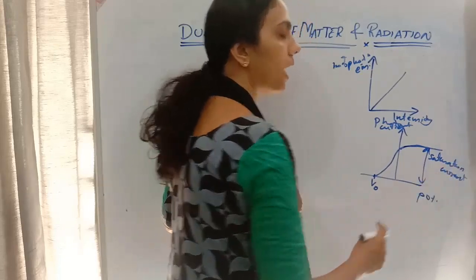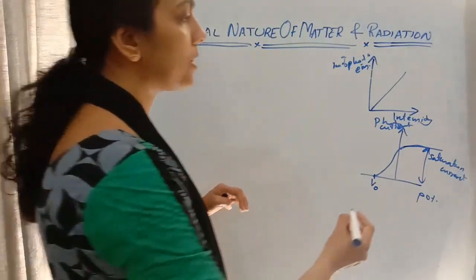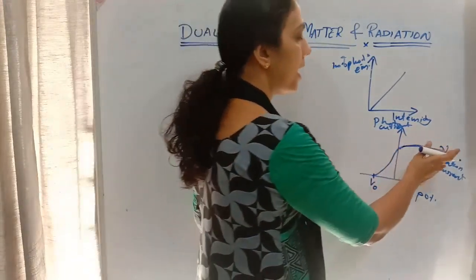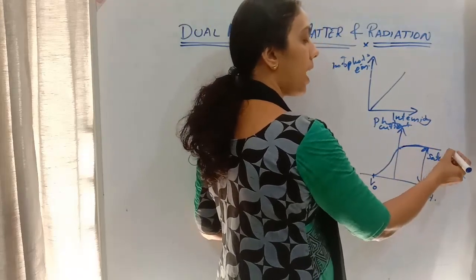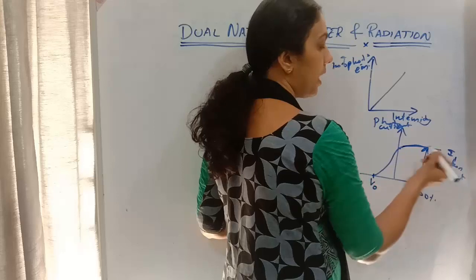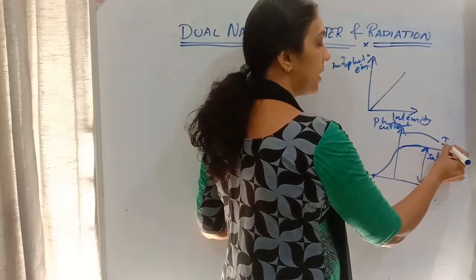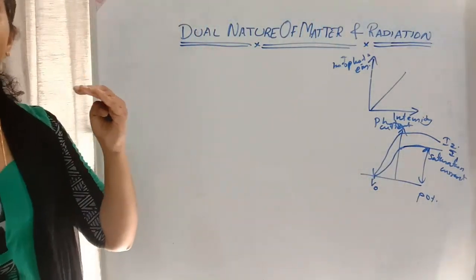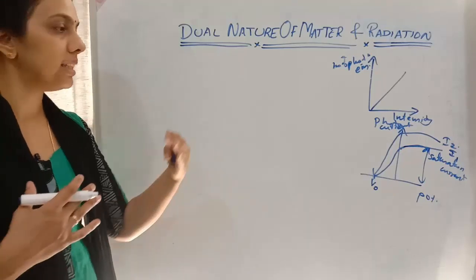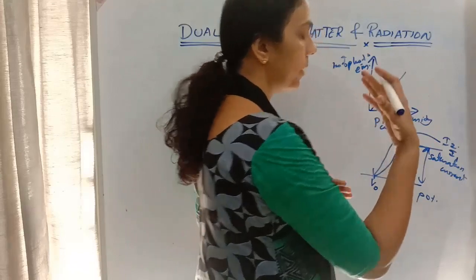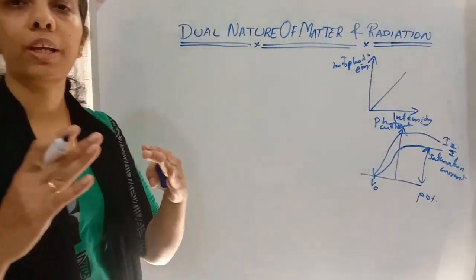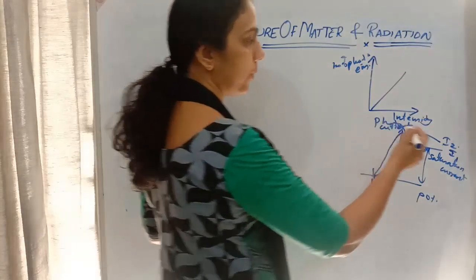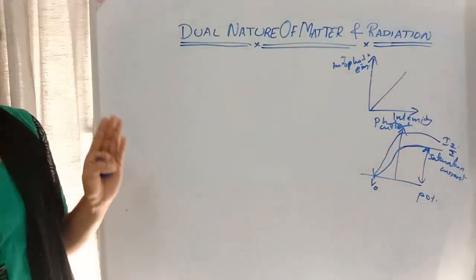For a particular frequency ν₁, when I increase the intensity, the number of photoelectrons emitted also increases. However, the stopping potential remains constant — there is no change in stopping potential value when intensity is changed at a particular frequency.